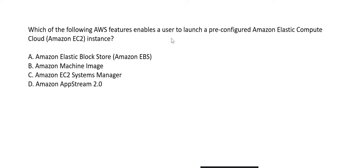The first question: which of the following AWS features enables a user to launch a pre-configured Amazon EC2 instance? The answer is AMI — Amazon Machine Image. A pre-configured EC2 instance is essentially a machine image.